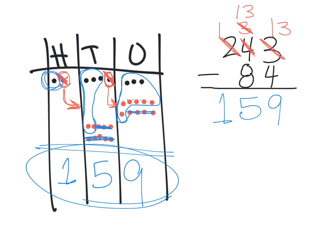So the idea, parents and teachers: use this place value pictorial representation to make the algorithm physical for students who might be struggling, and do them side by side so students can see what's going on and understand how to record it in the standard algorithm. Eventually, you can start weaning your students from the place value chart and get rid of it in favor of only the standard algorithm.